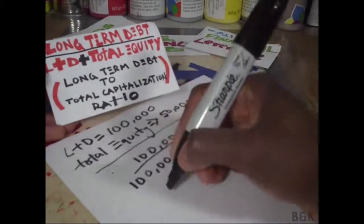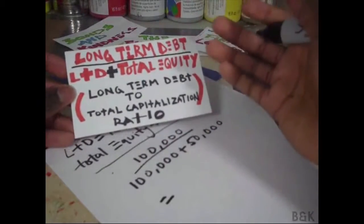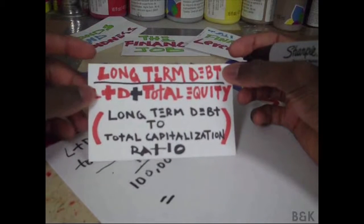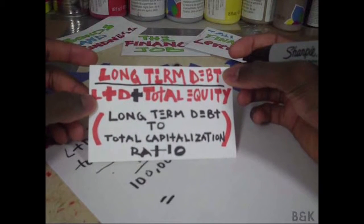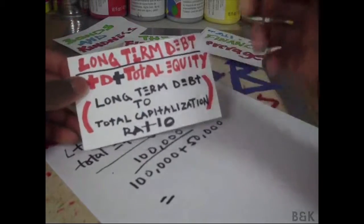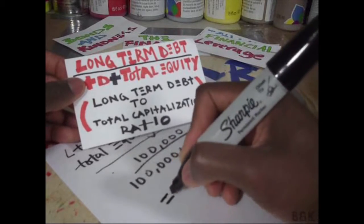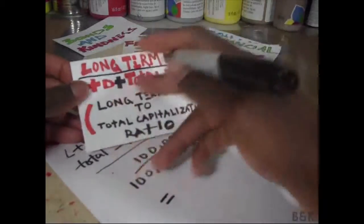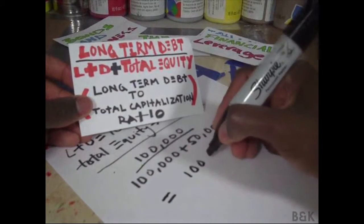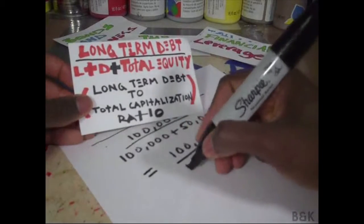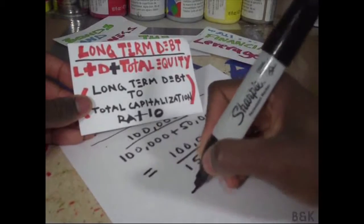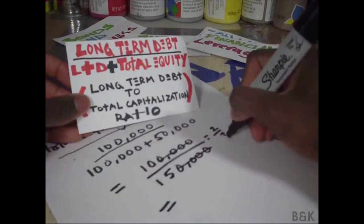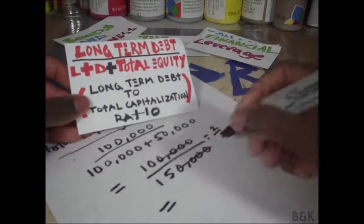This really hinges on your understanding of the word 'capital.' When we talk about market capitalization, you'll see there are so many ways of looking at capital. Why are we forcing long-term debt into the conversation and calling long-term debt plus total equity 'total capitalization'? Anyway, doing the math: $100,000 over $150,000 — cancel four zeros — gives us two-thirds, or approximately 0.67.